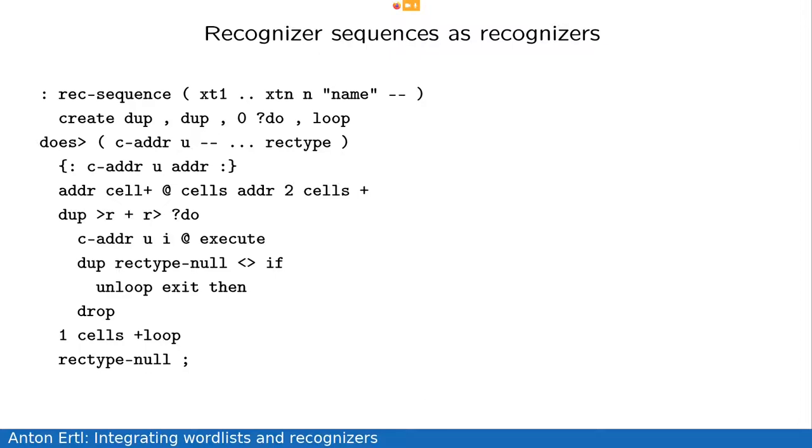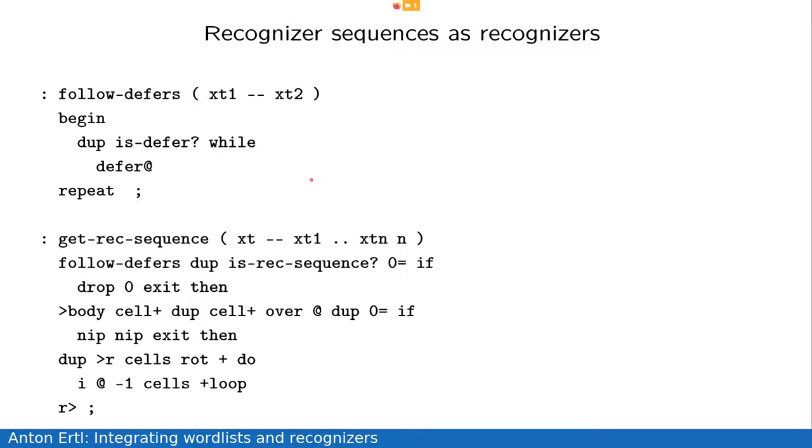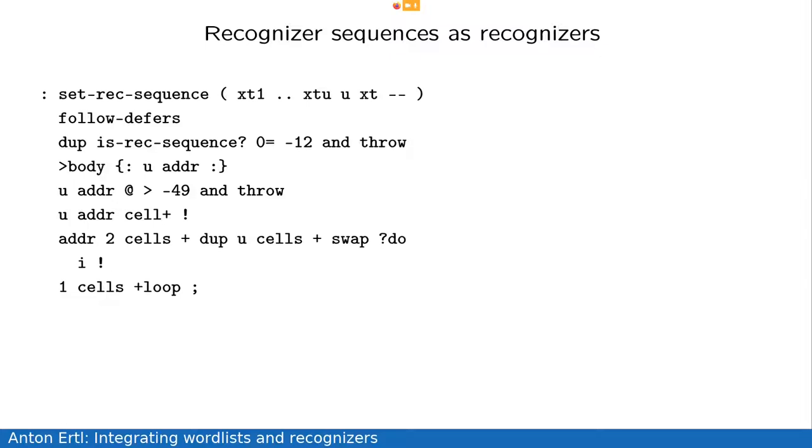So, the next thing, we also have access words. So, the get-rec-sequence, which gets the recognizers in the recognizer sequence and set-rec-sequence on the next screen. And the only remarkable thing about this is that we follow defers because we want to be able to put deferred words into a recognizer sequence and have them transparent there. So, you can put the deferred word there and then put the recognizer in the deferred word.